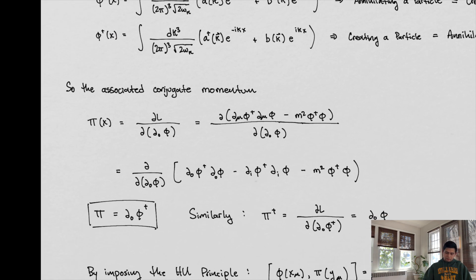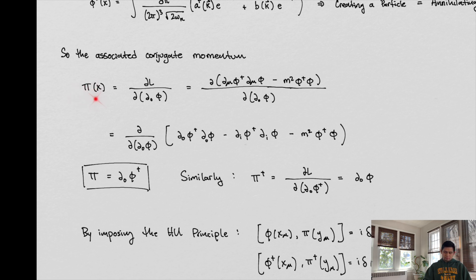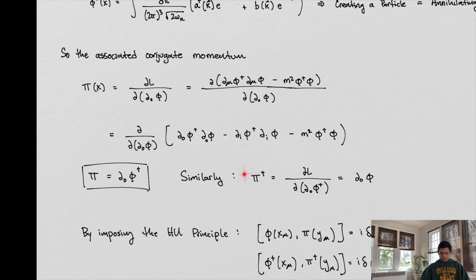Associated with these two things, we can create a conjugate momentum. You can pause the video and go through all the mathematics. Once you plug the Lagrangian in, the Lagrangian has these complex solutions. If you take the derivative with respect to the non-complex part, that's just a constant, and we get the conjugate momentum. Similarly, the complex conjugate of our system is going to look analogous, and you can go through that math as well.